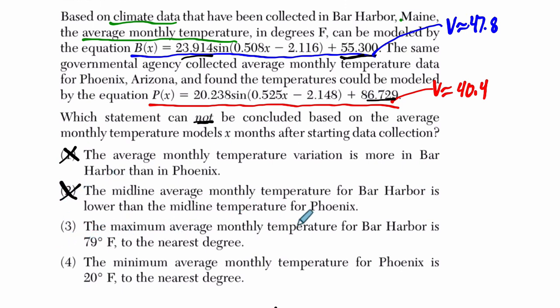The maximum average monthly temperature for Bar Harbor is 79 degrees to the nearest degree.